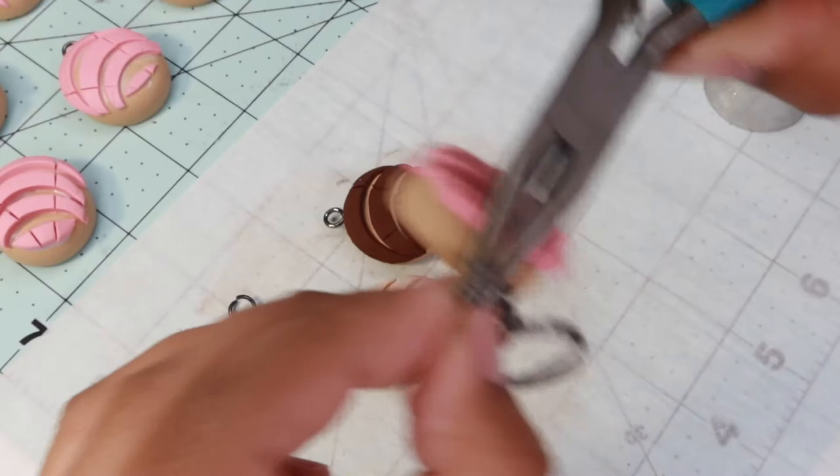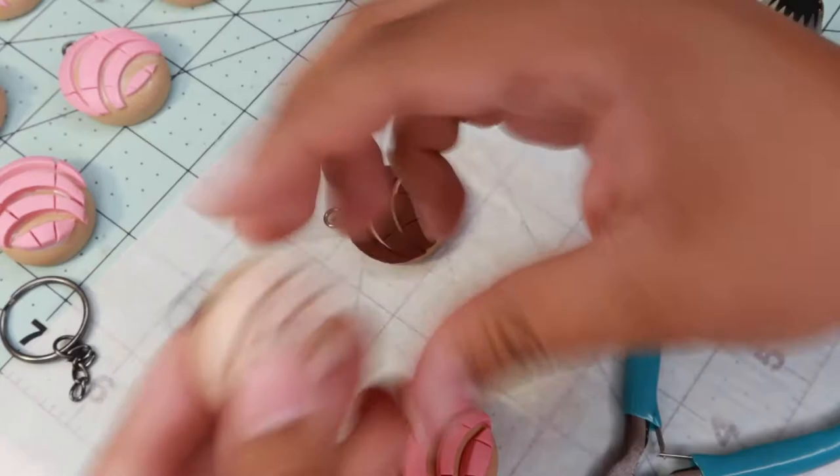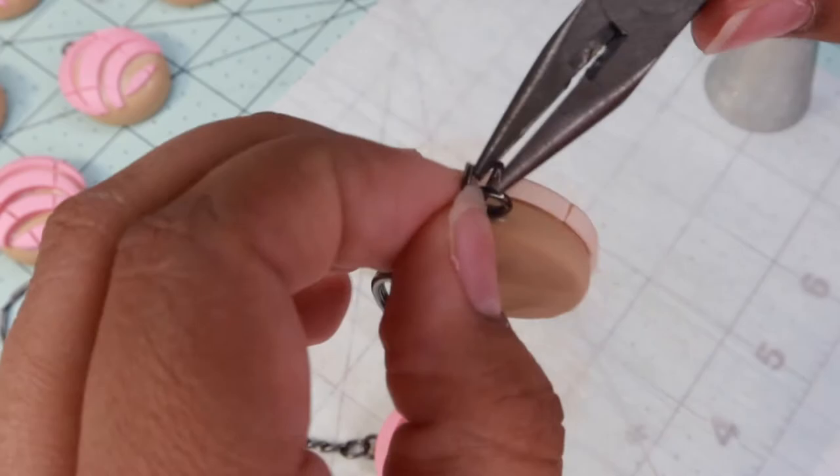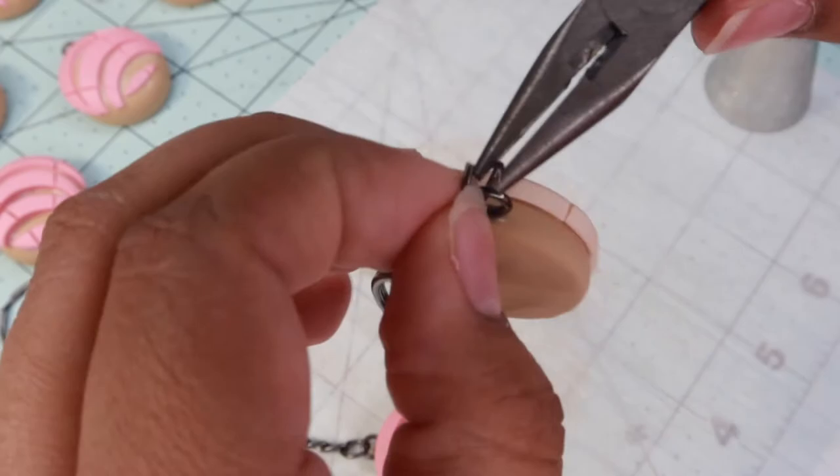And once they are out they look like this. I go ahead and add the finishing touches to them which are these little jump rings and the little chains for the keychains. I use my little plier just to close everything up and voila, simple as that, you are done. And this is how I make my three little different colored keychains for my conchas.